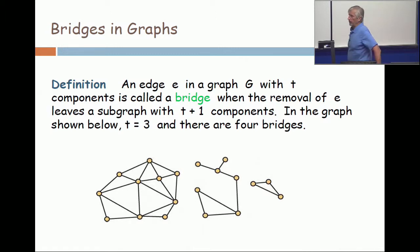An edge in a graph is called a bridge if when you remove it, the graph has one more component than when you started.